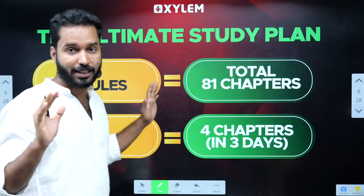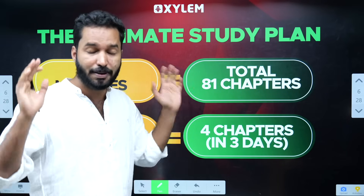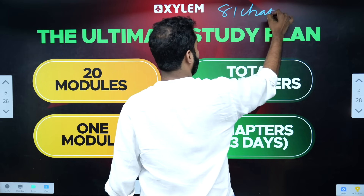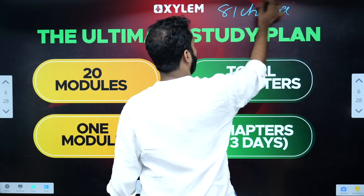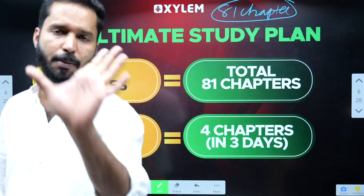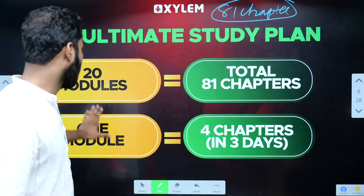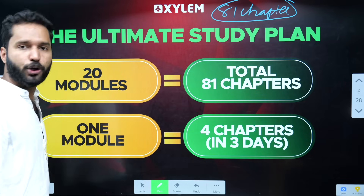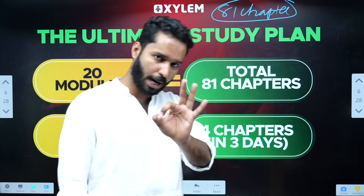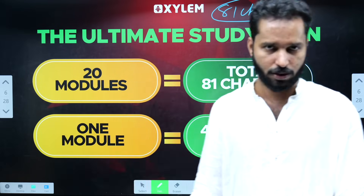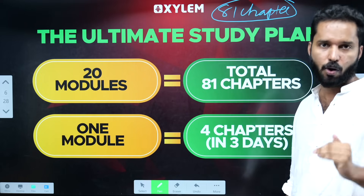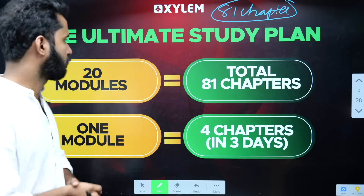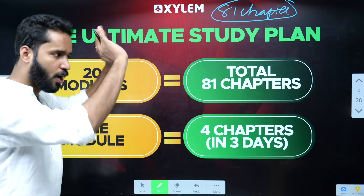The entire syllabus is based on how we are going to build structure. We have to plan a new syllabus. In the entire chapter, there are 20 modules. There are 4 or 5 chapters in each module.